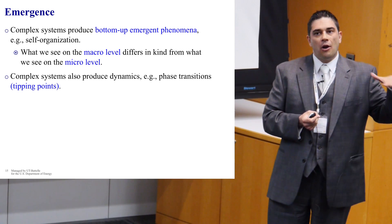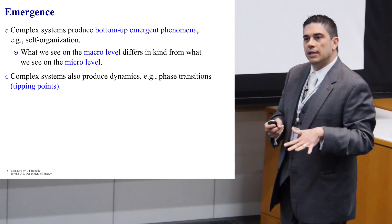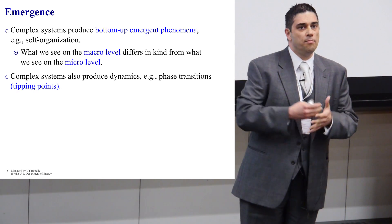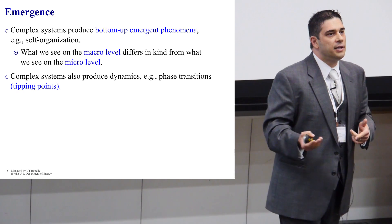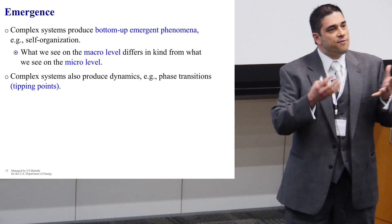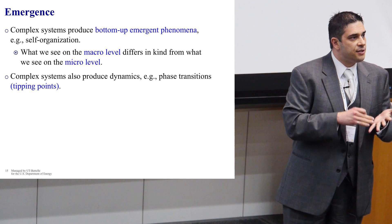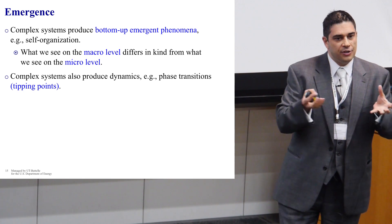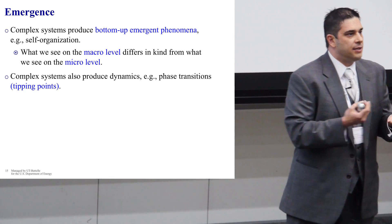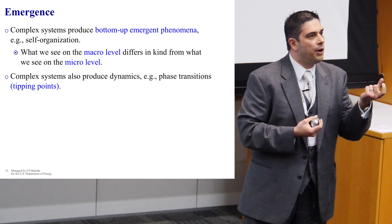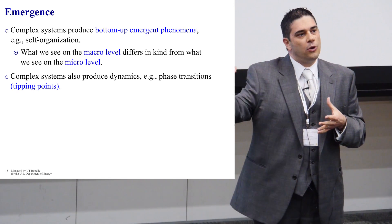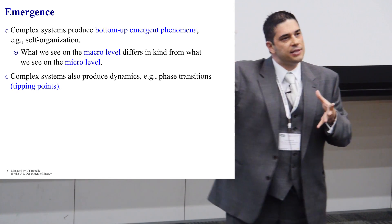One significant property of complex systems are the emergent phenomena that occur. What we observe on the macro level differs significantly from what we see on a micro level. For example, our brain is a complex system consisting of billions of neurons that are connecting and disconnecting through different chemical and electrical pathways to create various functions of the brain, like intelligence, learning, and consciousness. All these functions are results of emergent phenomena. Complex systems also produce dynamics like phase transitions — we call them tipping points. A tipping point is when the system reaches a given threshold, after which the whole state of the system changes significantly.